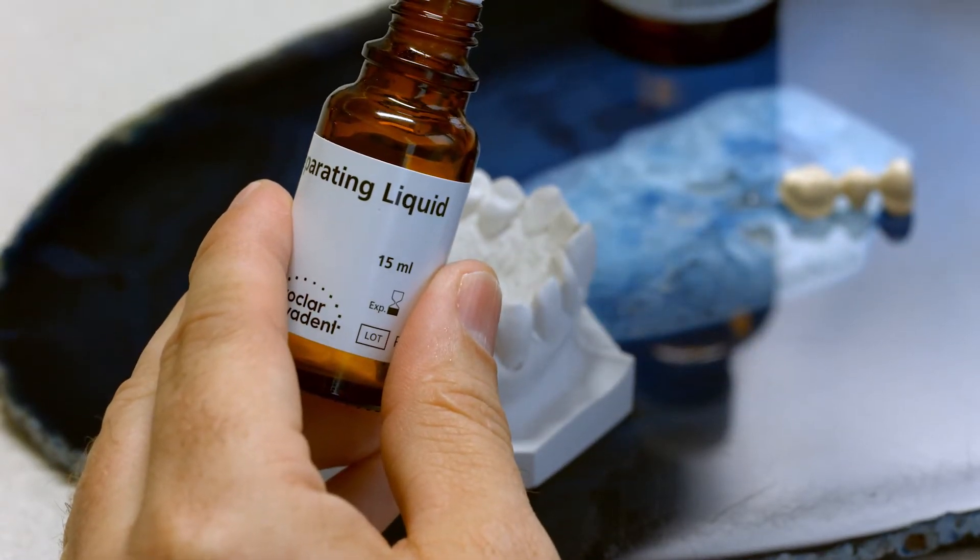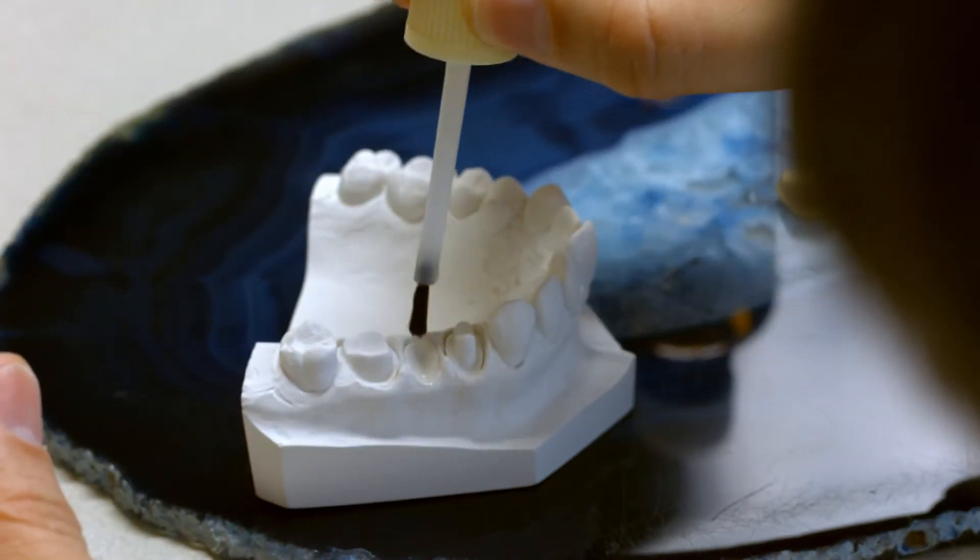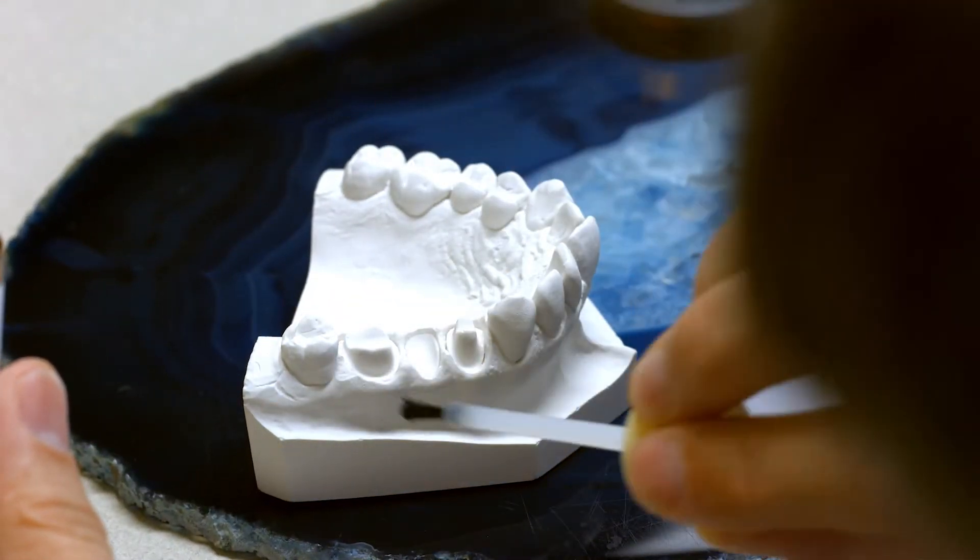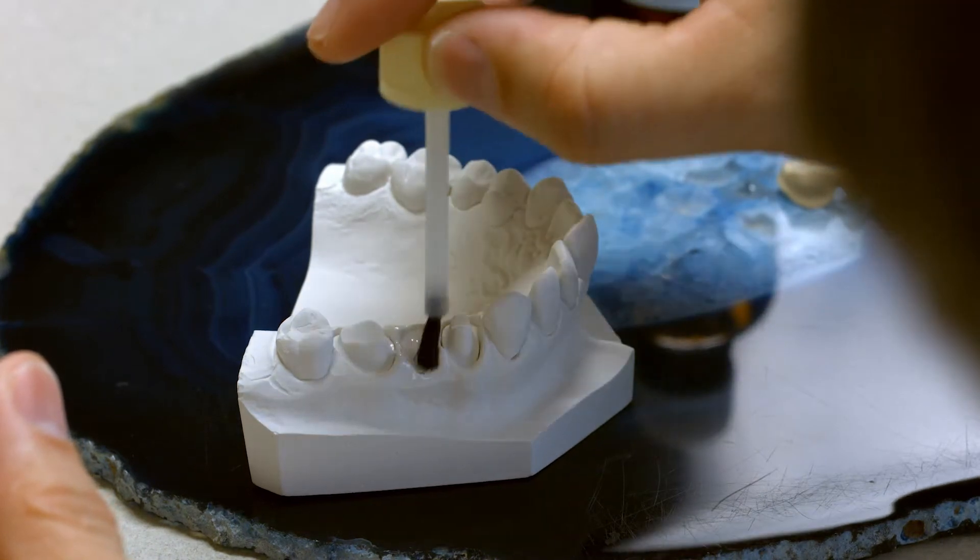Once the product has dried, apply IPS Ceramic Separating Liquid. This prevents the ceramic materials from sticking to the model or drying out.